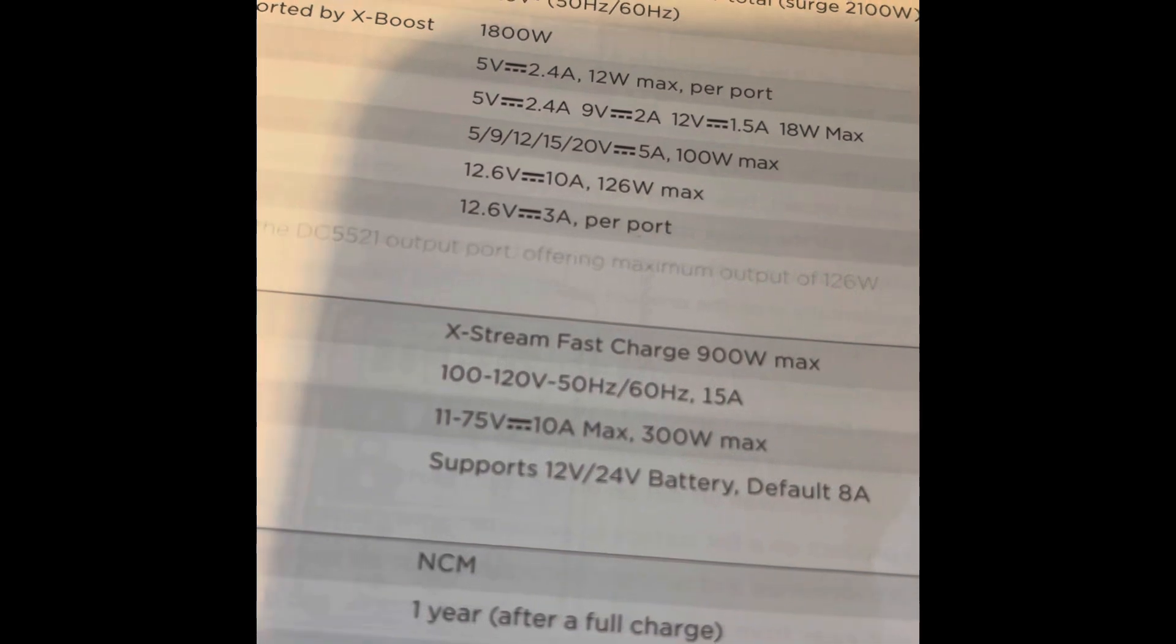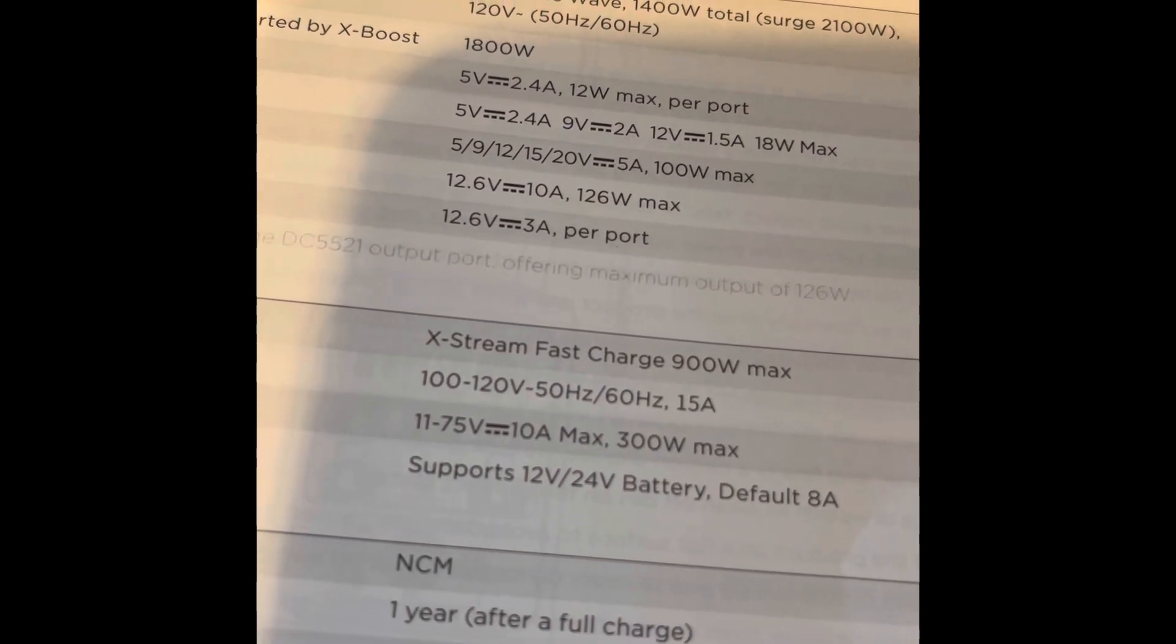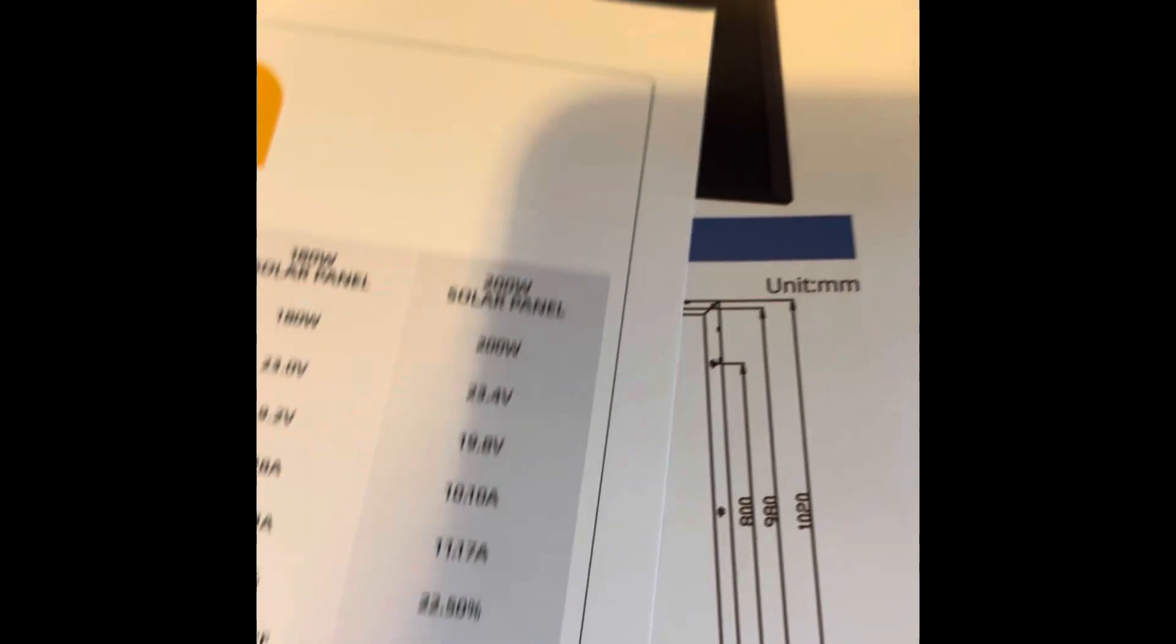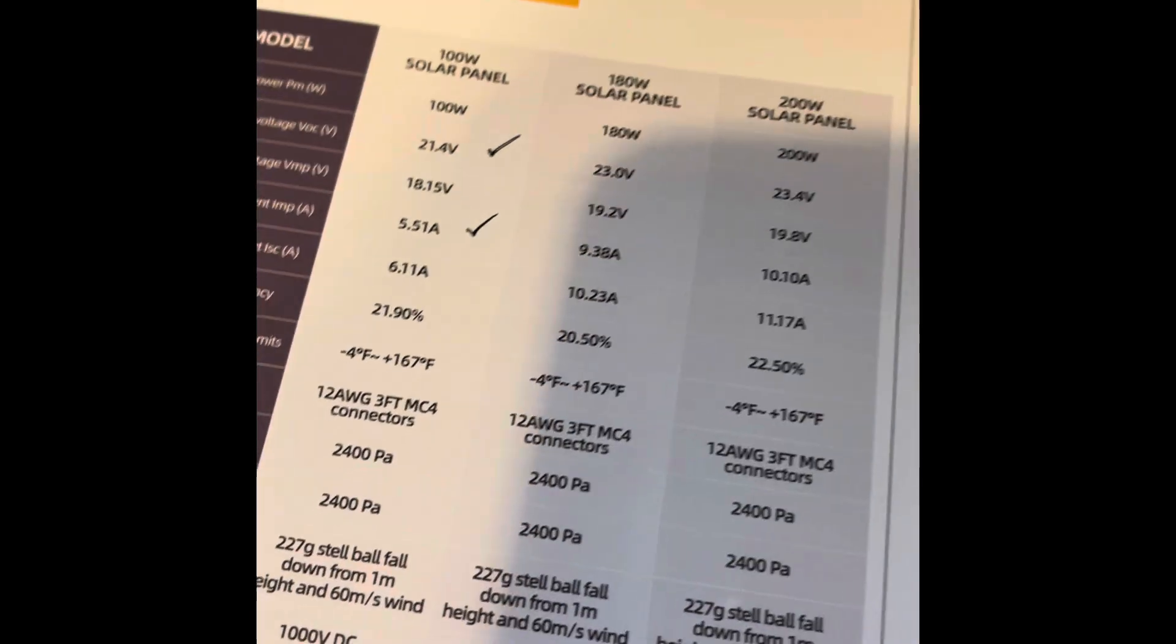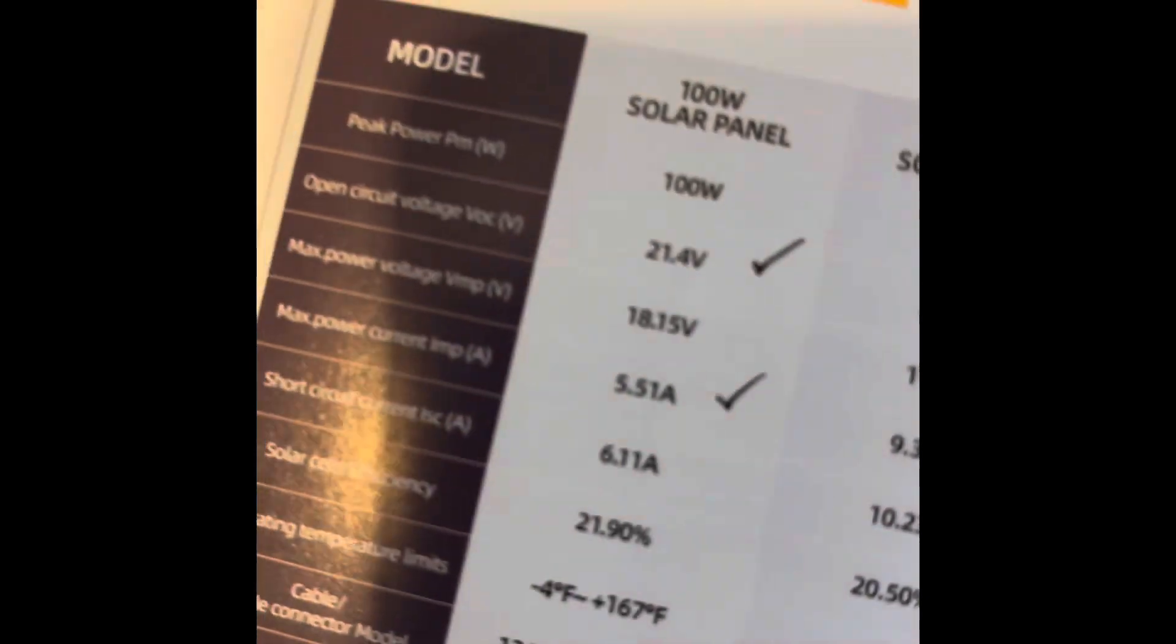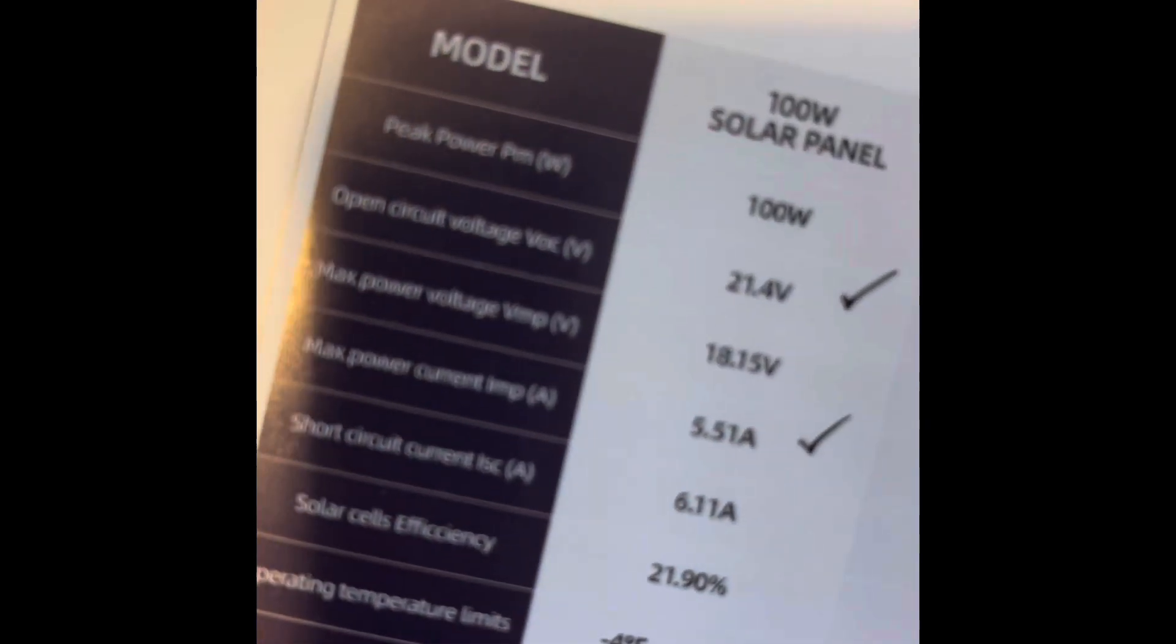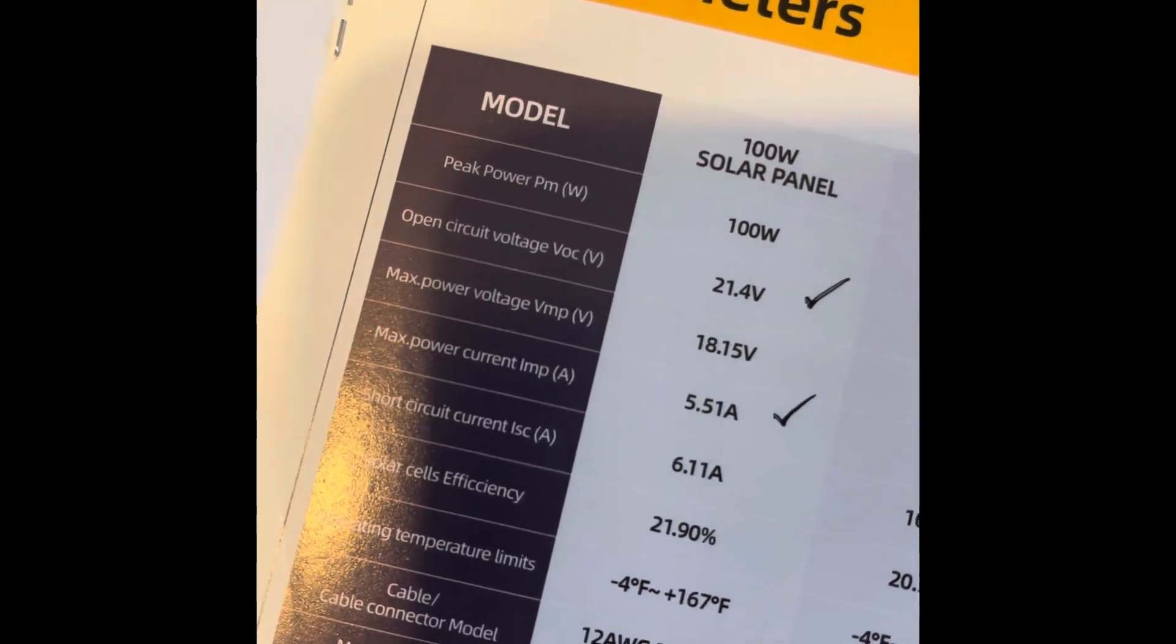It'll handle between 11 and 75 volts, 10 amp max, and 300 watt max. Then I pull up the specs on the first one, the Bouge RV, from my user manual. I see the specs and I checked the box I think I should be using for the voltage. This panel is rated 21.4 volts and the amps is 5.51 amps max power current.